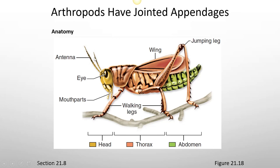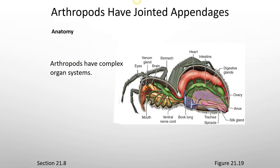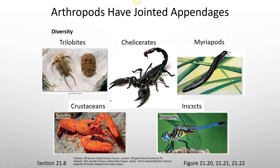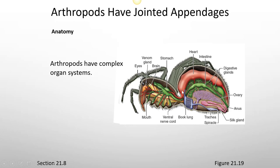Here's the basic anatomy. On the outside they have antennae, eyes, and mouth parts. They have legs that allow them to walk, a jumping leg, and wings in some cases. They have three major parts: the head, the thorax, and the abdomen. Arthropods have complex organ systems. Here you can see a venom gland of a spider. They have a mouth that leads into a digestive tract, digestive glands, ovaries, a silk gland for spinning silk, an anus, a trachea, book lung, and quite a large heart, as well as a stomach.